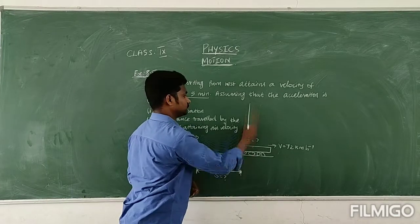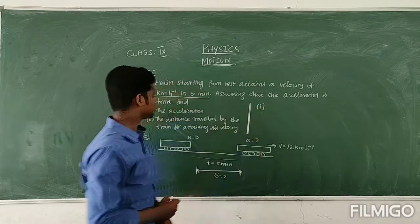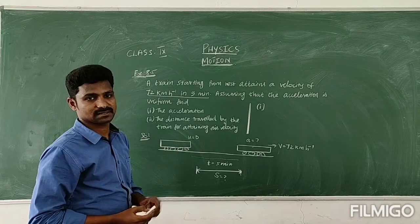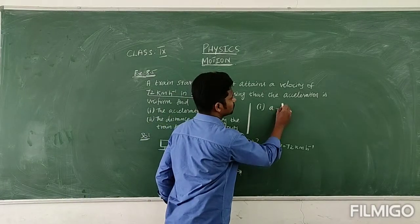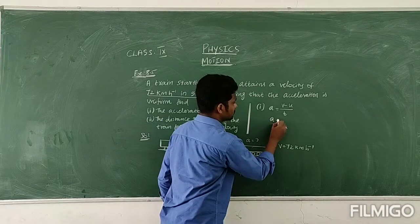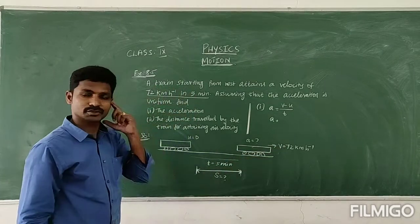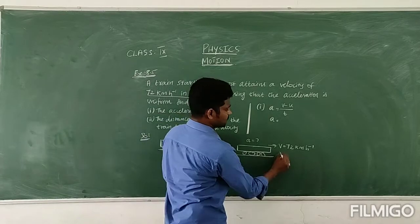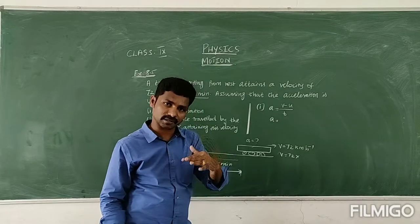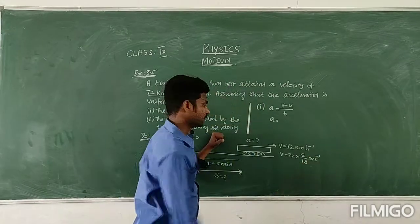For the first one, listen — the acceleration. You can find the acceleration. Generally, acceleration equals the change in velocity divided by time. So acceleration is equal to final velocity minus initial velocity, divided by time. The final velocity is 72 km per hour. But before that, you should convert this value into meters per second. V is equal to 72, and you know how to convert from km per hour into m/s — multiply by 5/18.